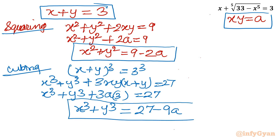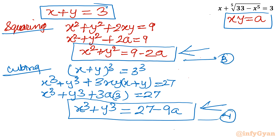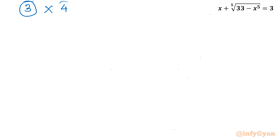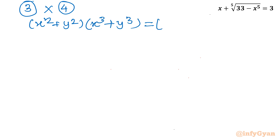So we now have the sum of squares: x^2 plus y^2 equals 9 minus 2a (equation 3), and sum of cubes: x^3 plus y^3 equals 27 minus 9a (equation 4). I will take the product of both equations — operation 3 times 4: (x^2 plus y^2)(x^3 plus y^3) equals (9 minus 2a)(27 minus 9a).